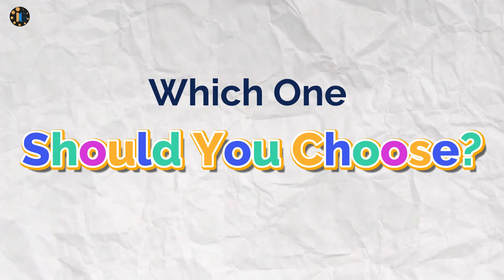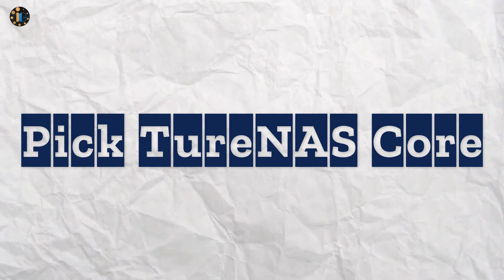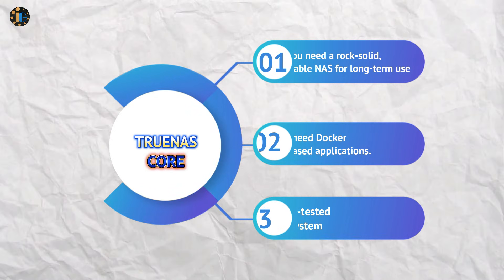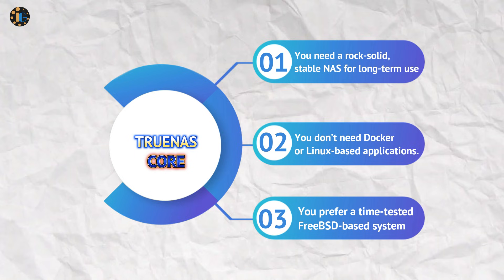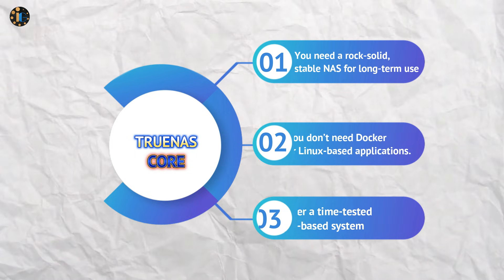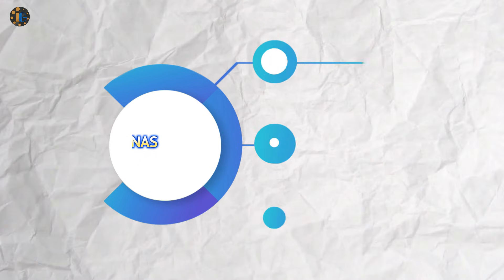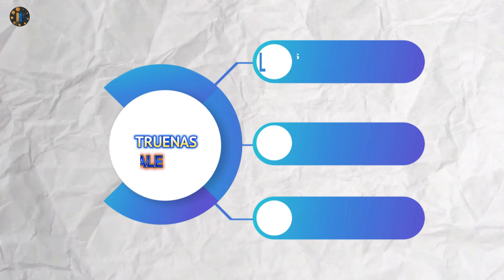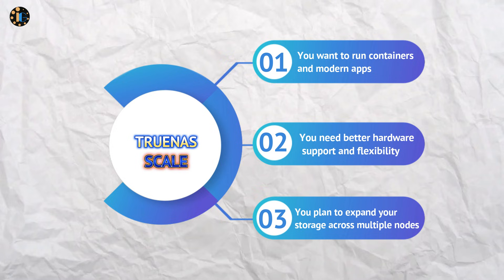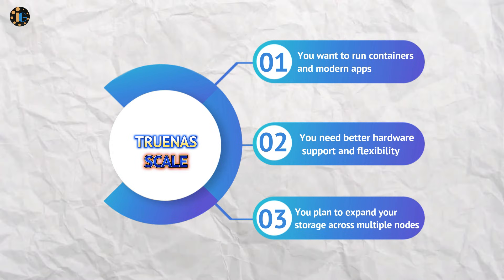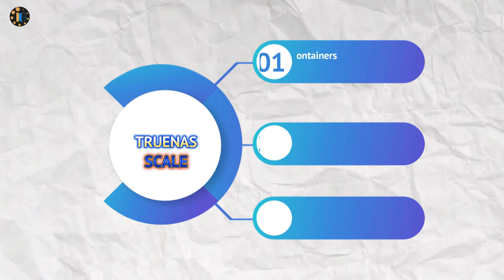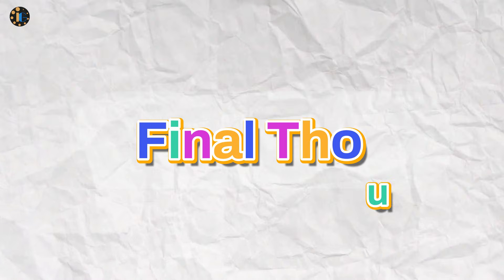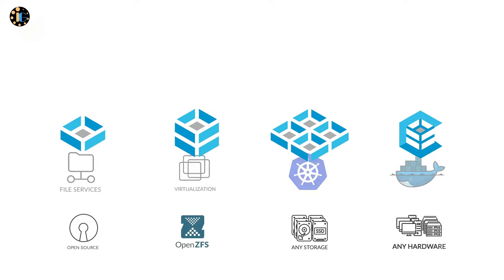Which one should you choose? Pick TrueNAS Core if you need a rock-solid, stable NAS for long-term use, you don't need Docker or Linux-based applications, and you prefer a time-tested FreeBSD-based system. Pick TrueNAS Scale if you want to run containers and modern apps, you need better hardware support and flexibility, or you plan to expand your storage across multiple nodes.